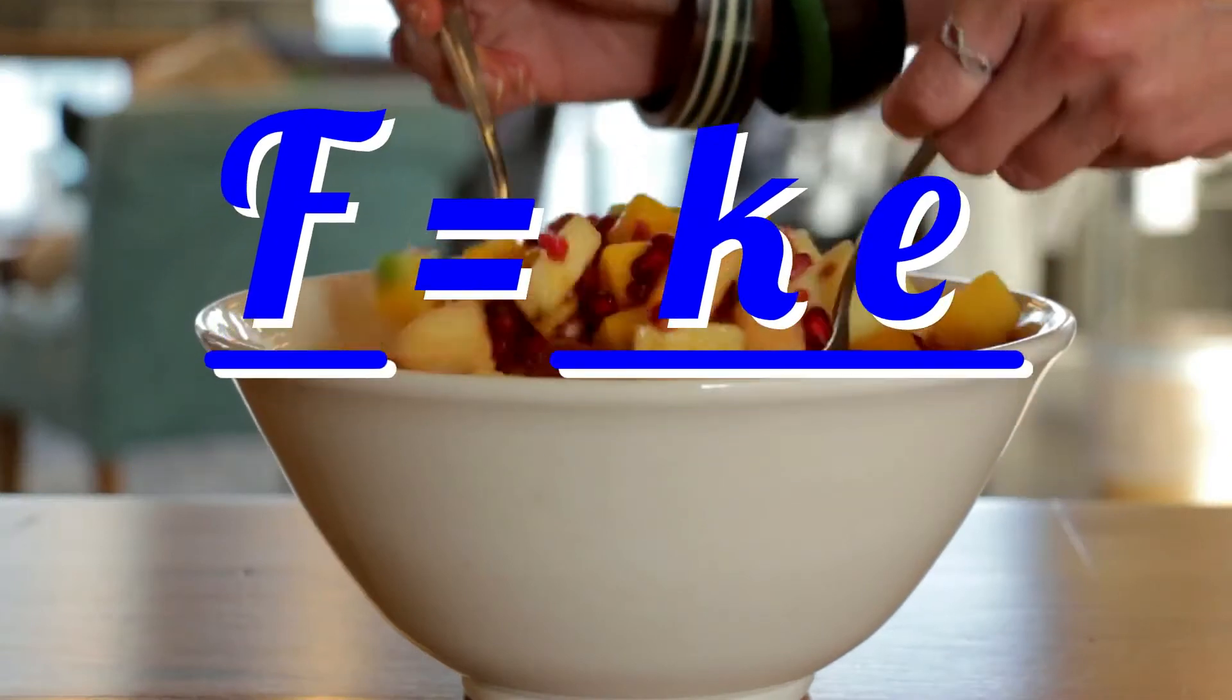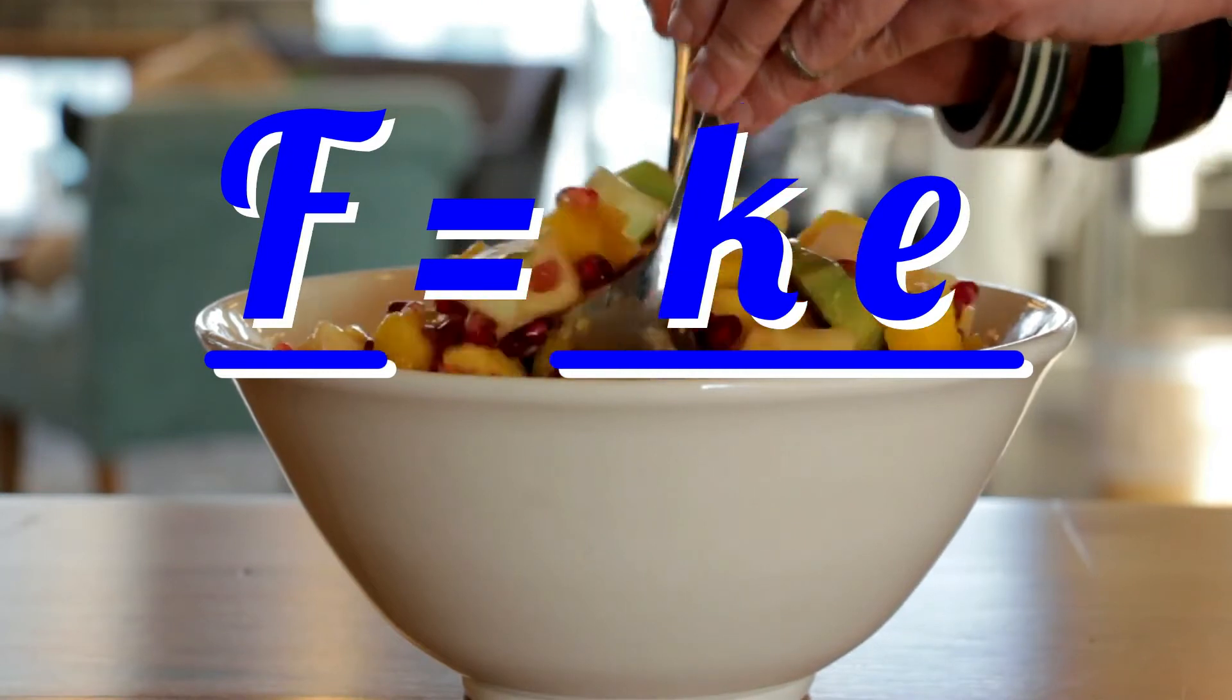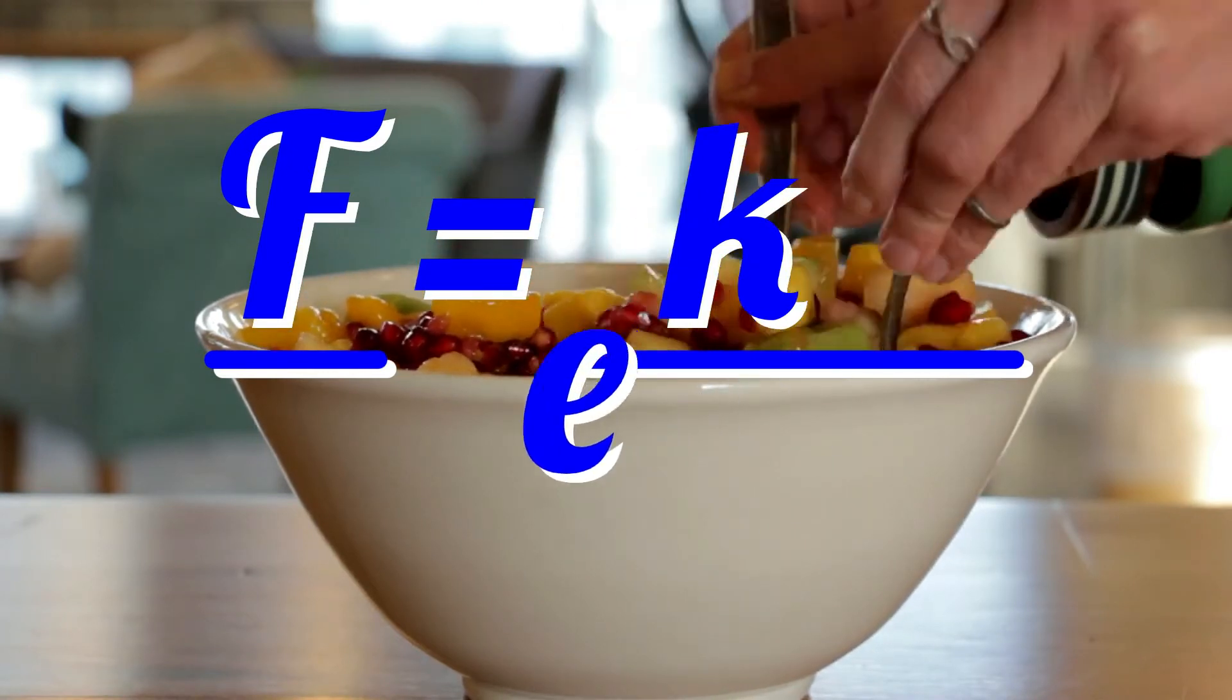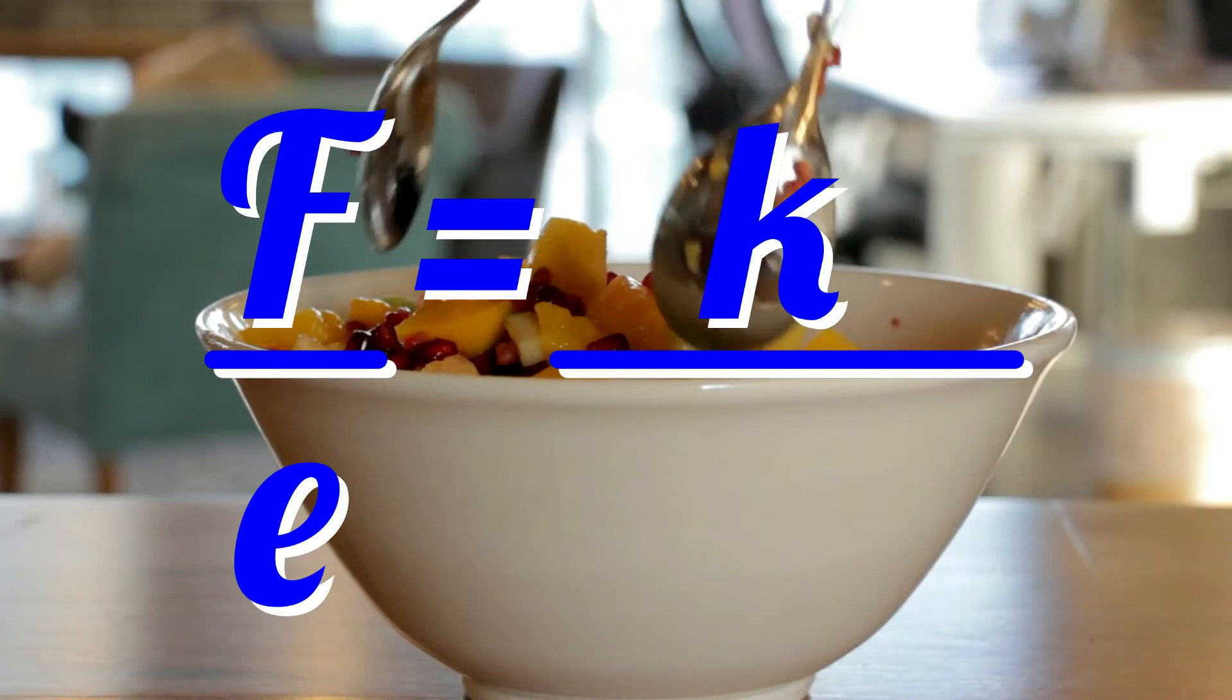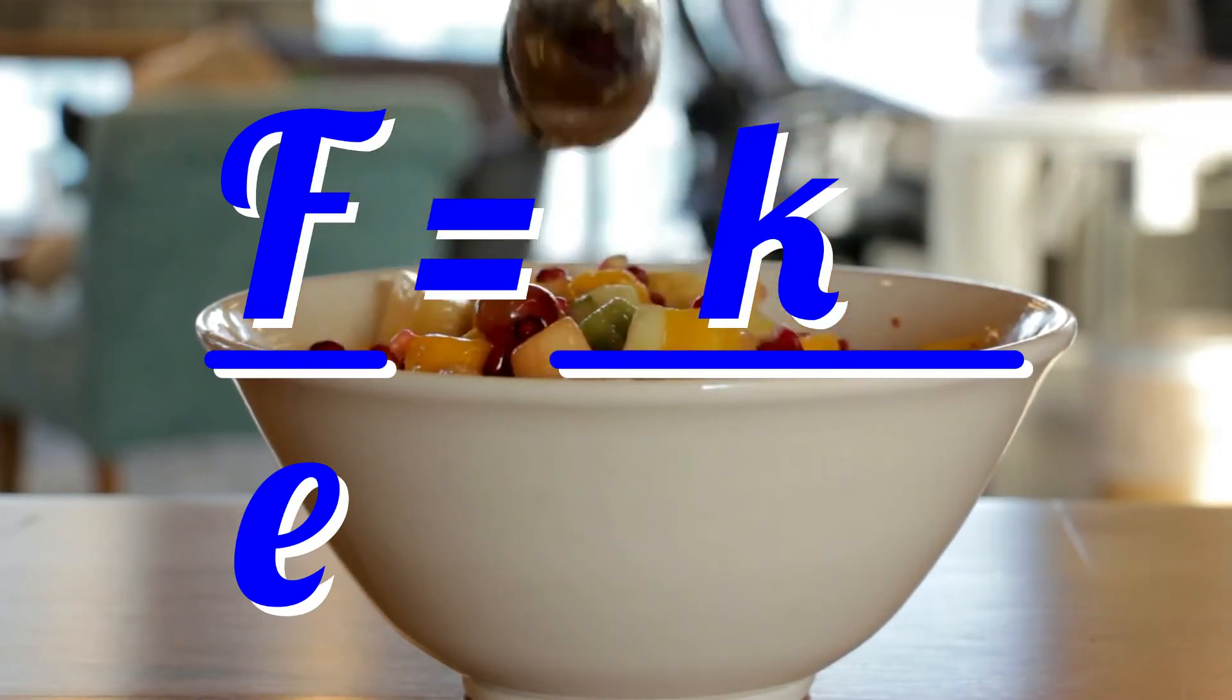To make the spring constant the subject of the equation, if you know the force and the extension, divide through by the extension. That is, move the e under the F. F over e equals k. Force divided by the extension equals the spring constant.